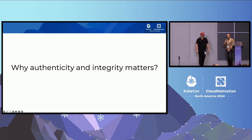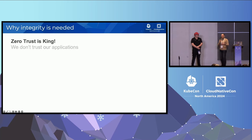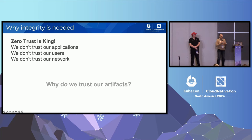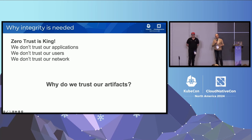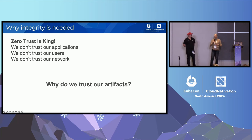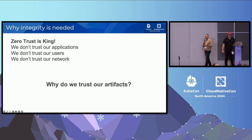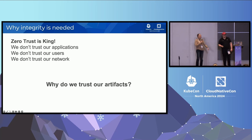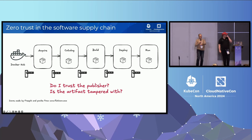Starting with why integrity and authenticity matters. We implement zero trust everywhere else — for our applications, for our users, we don't trust them all the time, we ask them to re-authenticate every time when they need to do some new action. We do the same for our networks, but we rarely actually implement zero trust for our applications. So we go and pick up a container image from Docker Hub, we don't check who published it.